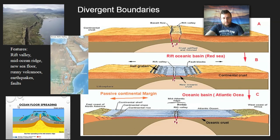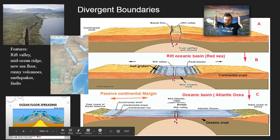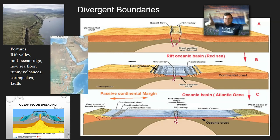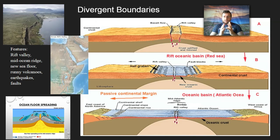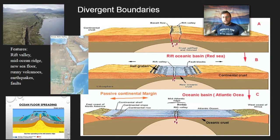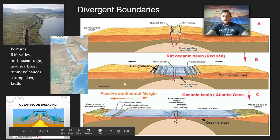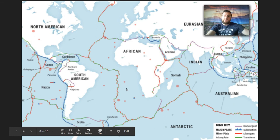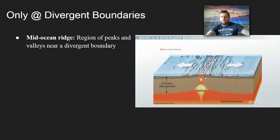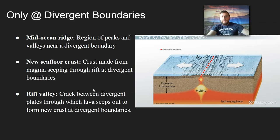By the time the rift becomes an ocean, you're going to have a mid-ocean ridge because as rocks are pushed apart, you get peaks and valleys in that area. You're going to have runny volcanoes because lava seeps through the crack on the Rift Valley and fills in the gaps. You'll also have earthquakes and faults because a lot of rock motion means rocks get stuck to each other. The features unique to divergent boundaries are the mid-ocean ridge, the Rift Valley, and new seafloor being formed from those runny volcanoes.